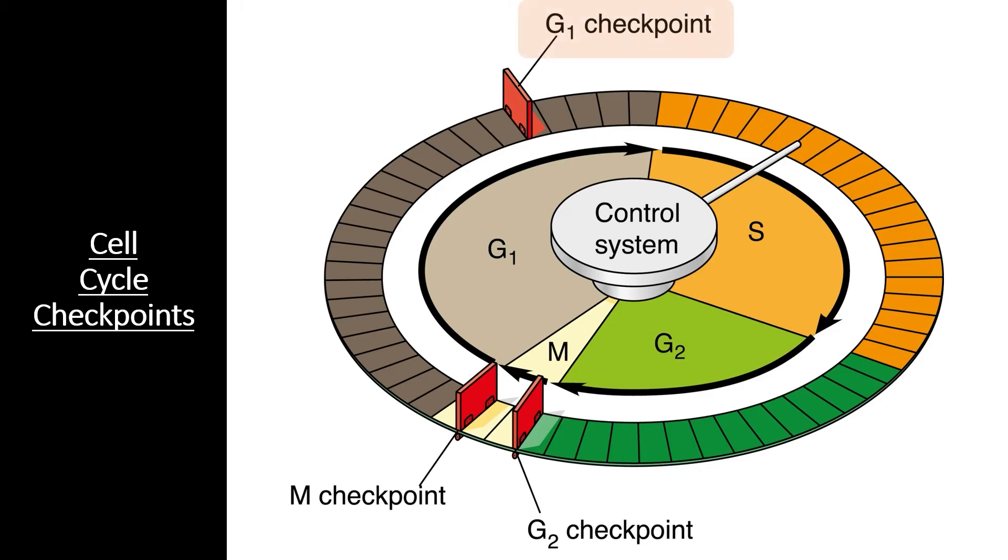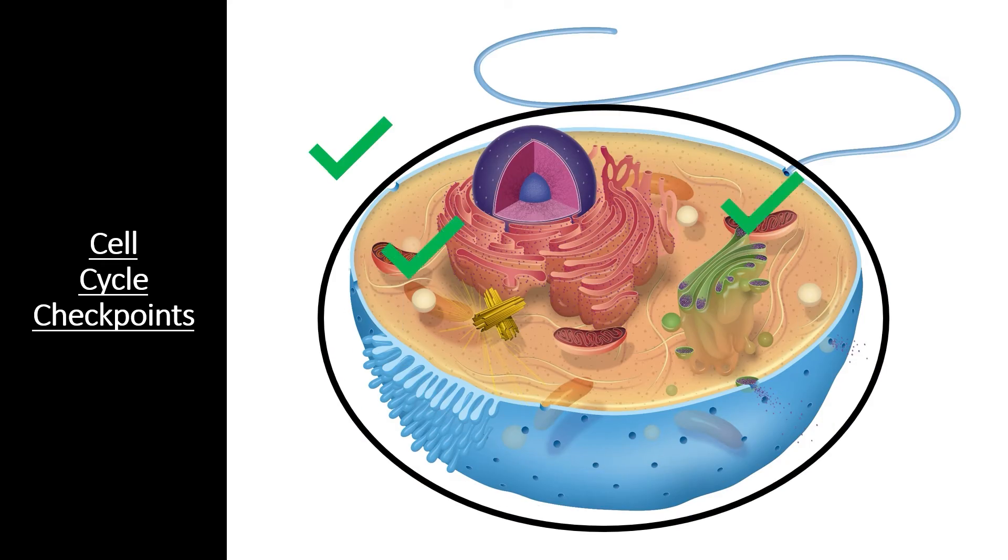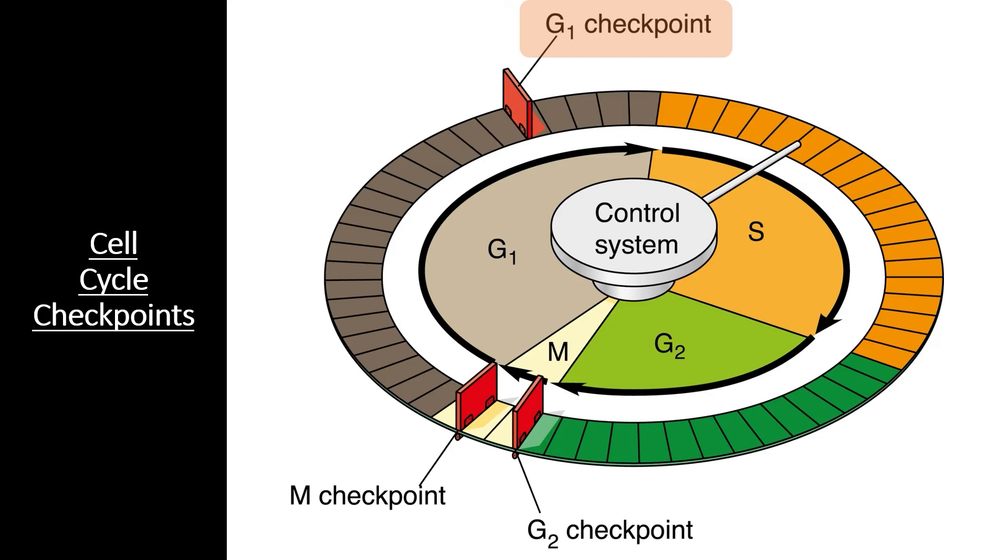The G1 checkpoint happens right before the cell enters S phase and replicates the DNA. During this checkpoint, the cell checks for several important things. The cell checks that it has an appropriate size to divide, that it has enough nutrients to supply both daughter cells with sufficient energy to get started, and it checks the DNA to ensure that there is no DNA damage. If any of these conditions are not met, or if the cell receives a signal to go into quiescence, it will enter the non-dividing G0 phase.